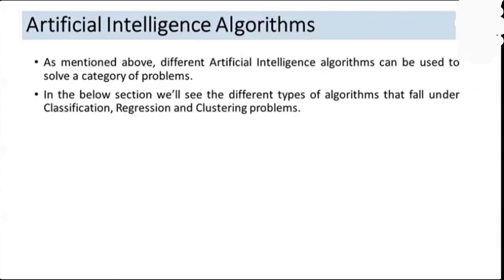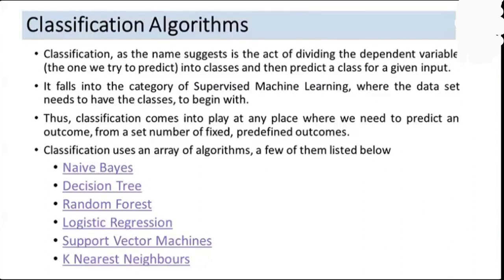For each category of task we can use a specific algorithm. There are different machine learning algorithms which can be used to solve different categories of problems — classification, regression, and clustering. In case of classification algorithms, as the name suggests, the act involves dividing the dependent variable into classes and then predicting the class for a given input.